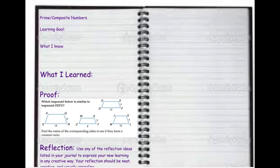For your proof, please discuss which trapezoid below is similar to the trapezoid D-E-F-G. D-E-F-G has a side length here of 4 and a side length of 12. So you want to decide which trapezoid also has those corresponding ratios.